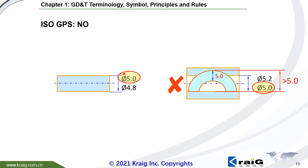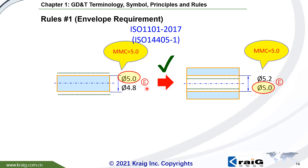According to ISO GPS, this size tolerance only controls local size — it does not control full pin deformation, and there is no Rule No. 1 requirement, so the part could be deformed even if the local diameter is 5.0. There would be interference between these two parts. In order to install this pin into the hole, you have to use Rule No. 1, the envelope requirement, or circle E. Both parts then have Rule No. 1 requirements and the function is okay.